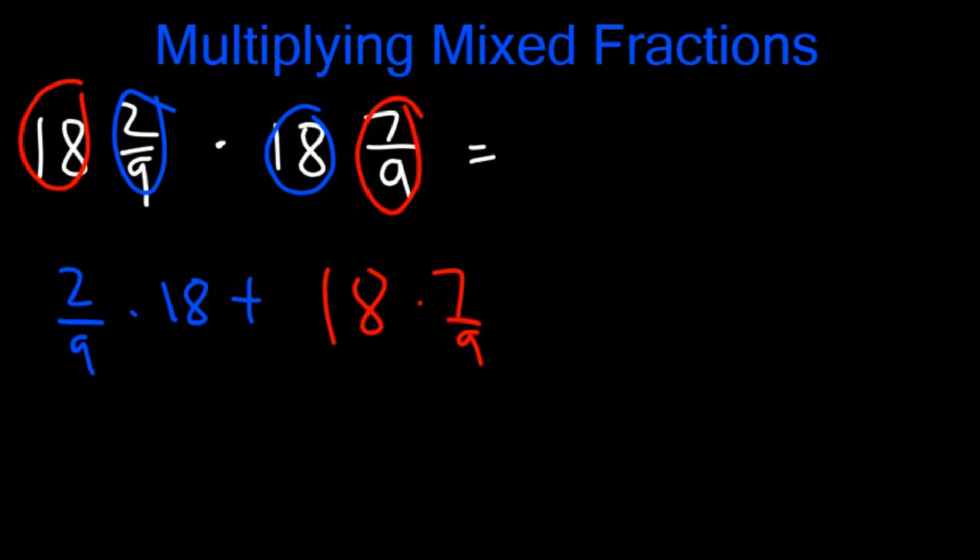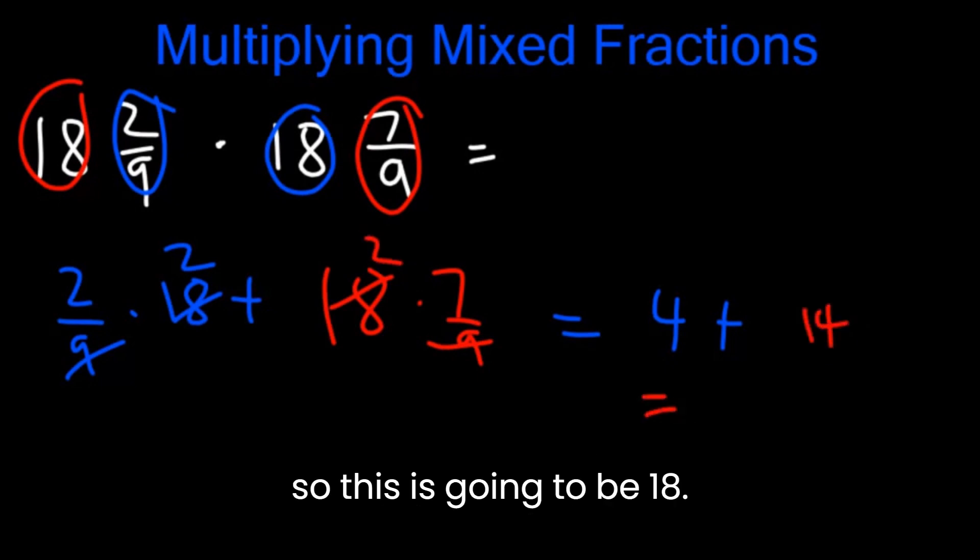And so this is going to be 2/9 times 18 cancels out. So that's 4 plus, this is 2. 2 times 7 is 14. So this is going to be 18.